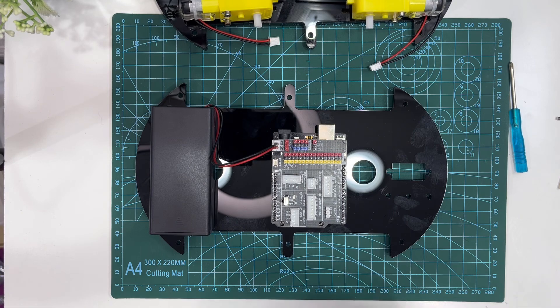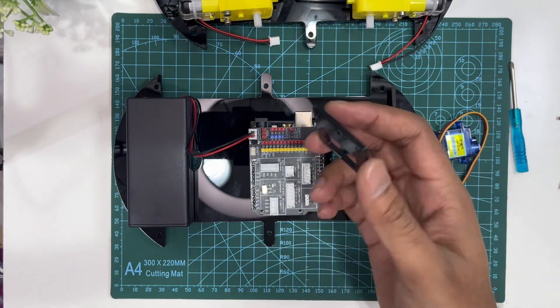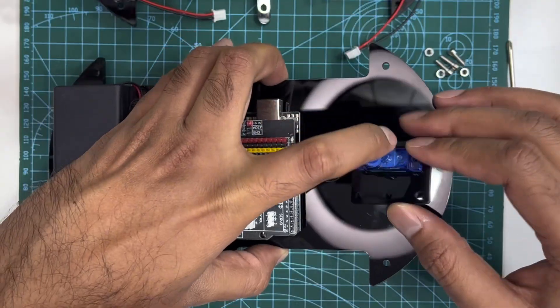Now for the ultrasonic sensor, let's take the SG90 servo motor, servo holder, and screws and nuts. Mount the servo motor like this way.